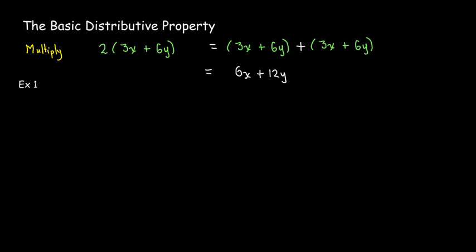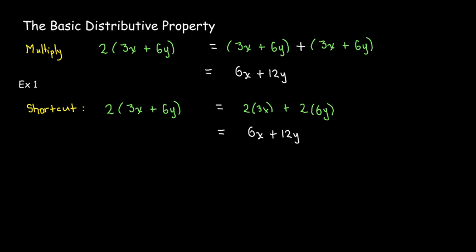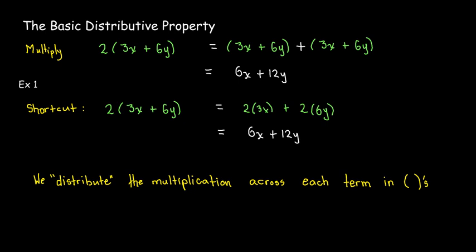That's kind of a long way to do this, because a simpler way would be to say I know I'm going to have 2 of the 3x's and 2 of the 6y's. So I just take 2 times 3x, add that to 2 times 6y. That's a shortcut, and that's what we call the distributive property because we are distributing the multiplication of the 2 across both the 3x and the 6y.